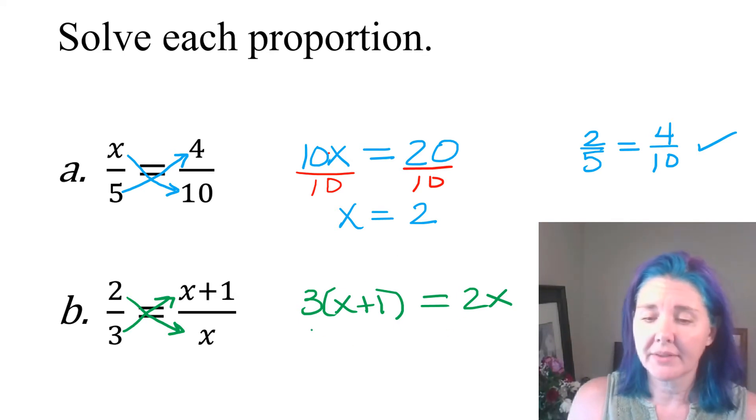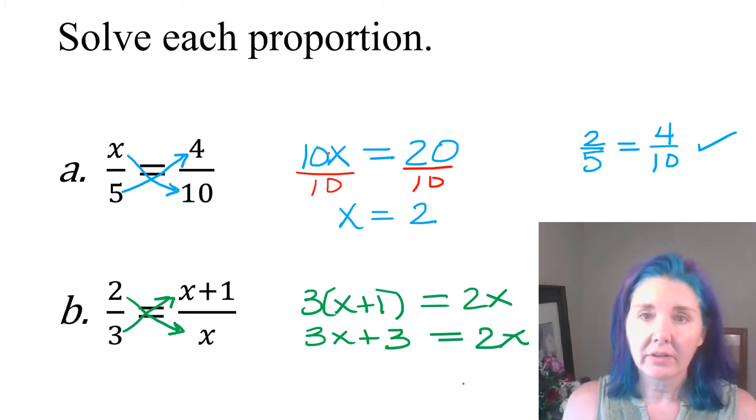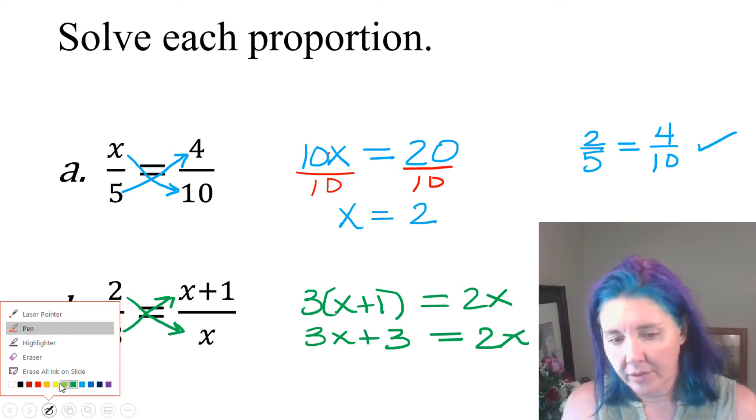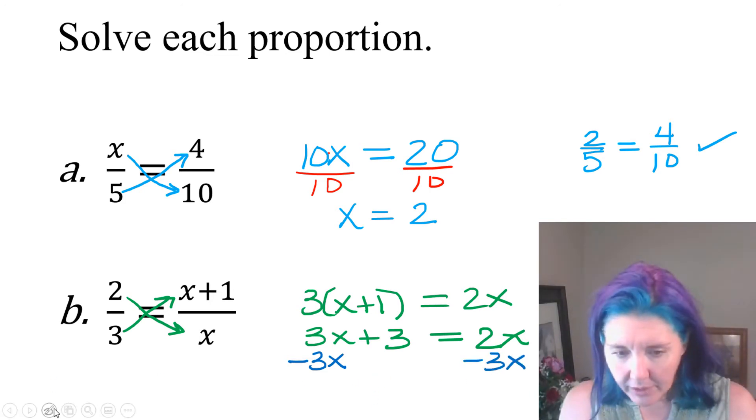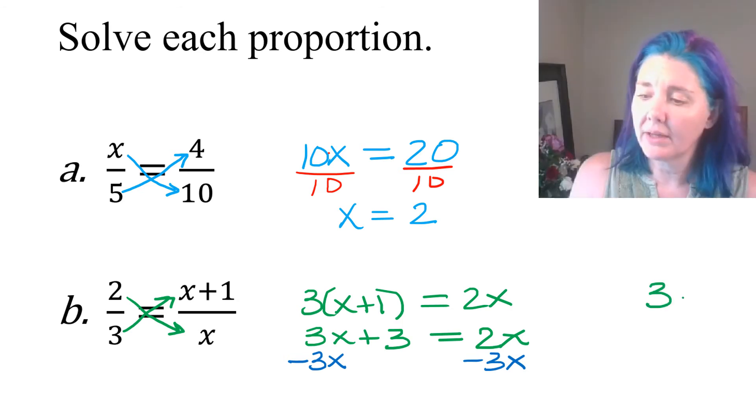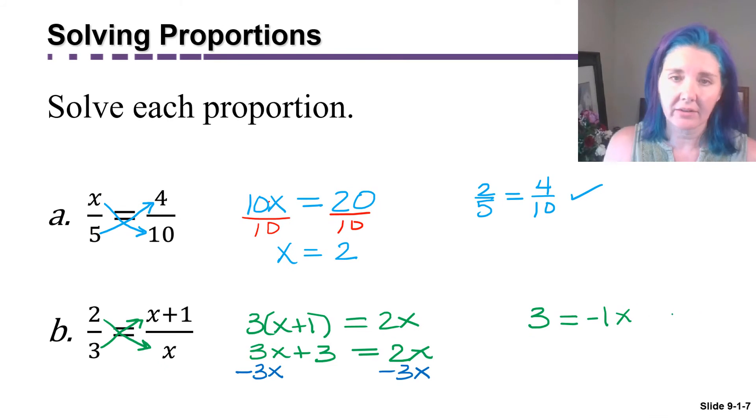Now I'm going to distribute through the parentheses. 3x plus 3 equals 2x. And now we need to solve the equation by getting the x's to one side and the numbers to the other. So what I mean by that is, for example, I could subtract the term—terms are things that are separated by plus or minus—subtract the term 3x from both sides of the equation. So that way we're left with 3 equals negative 1x or just negative x.